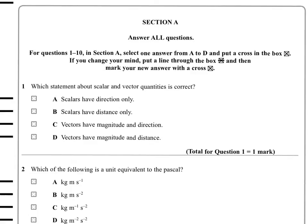Which statement about scalar and vector quantities is correct? Scalars have direction only, that's not true. Scalars have distance only. Distance is a very specific thing, that's not true. Vectors have magnitude and direction, that is true. Vectors have magnitude and distance, that's not true.